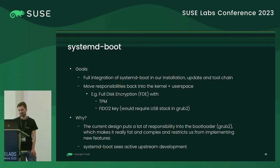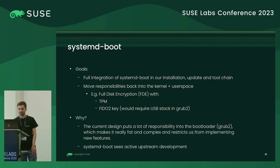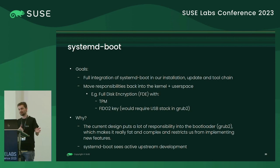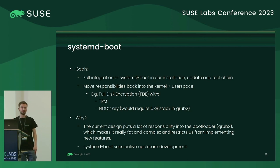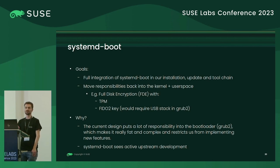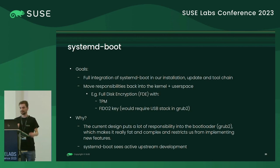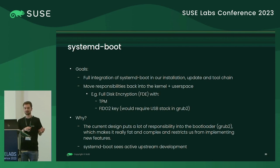Another major topic is systemd-boot. One of the goals is to integrate systemd-boot into the system so that in YaST you can select between grub and systemd-boot. Ideally it would be at the same feature level — you can still boot into all snapshots, have a health checker that automatically performs rollbacks if booting fails, and it also makes it easier to implement features like full disk encryption by moving more responsibilities from the bootloader back into user space.